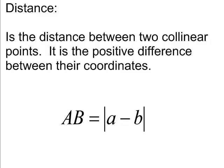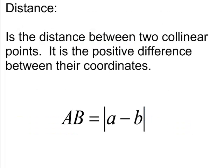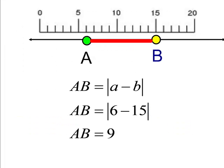And the distance between the two collinear points, it's the positive difference between the coordinates. Positive distance. We have the difference between 15 and 6. It's going to be 1, 2, 3, 4, 5, 6, 7, 8, 9. Last time I checked, 15 minus 6 is 9. So that's what we're doing.